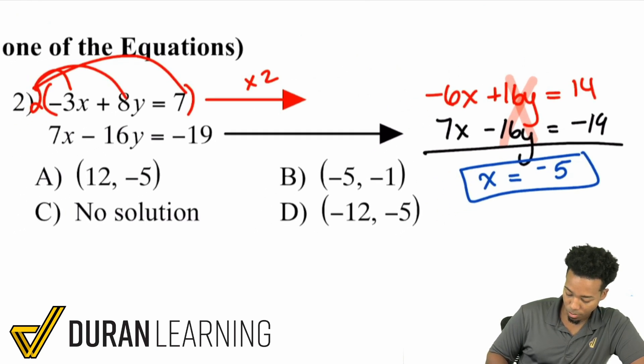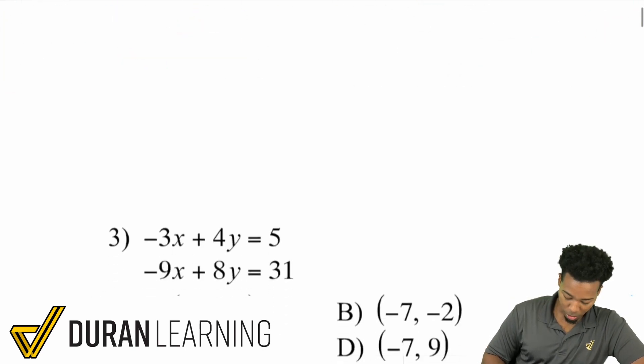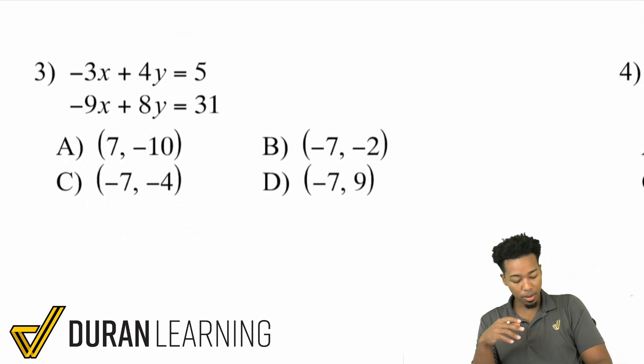Are we done? Yep, we're done because that's answer choice B, the only one with x being negative 5. Let's keep going here. I'm going to go for another problem where when we do our multiplication, we're still going to have to do a little bit more work.